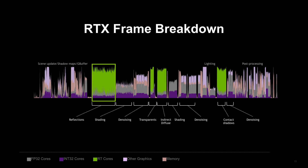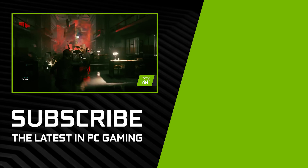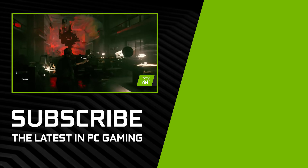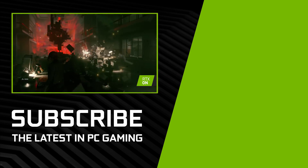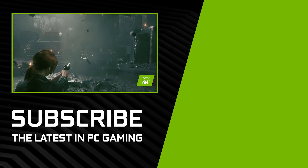Right after that is shading. The reflections themselves incur shading because you need to shade what's reflected, and then we do denoising, and so on through the frame. Control is going to be a fantastic game — we can't wait for gamers to get their hands on it. We hope you enjoy playing it as much as we enjoy building it. Thanks for watching.